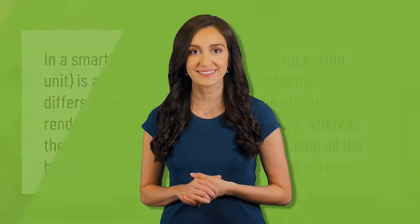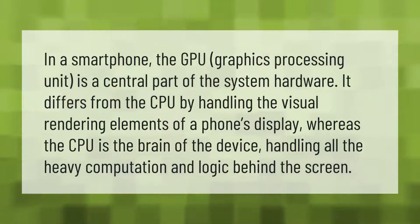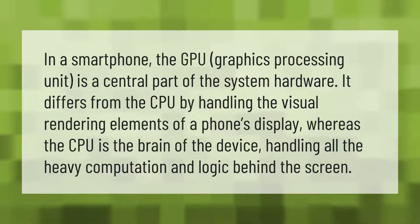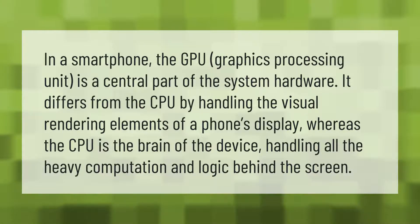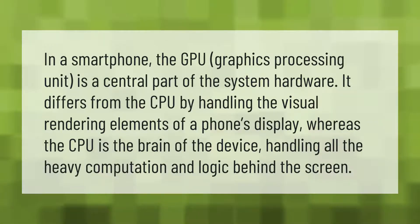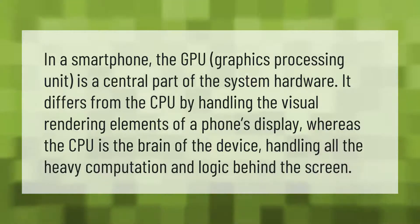In a smartphone, the GPU (Graphics Processing Unit) is a central part of the system hardware. It differs from the CPU by handling the visual rendering elements of a phone's display, whereas the CPU is the brain of the device, handling all the heavy computation and logic behind the screen.